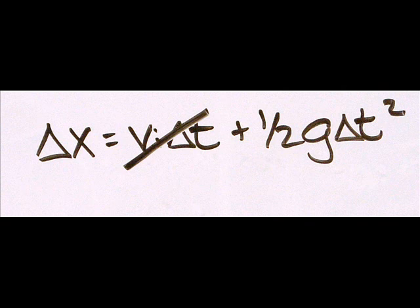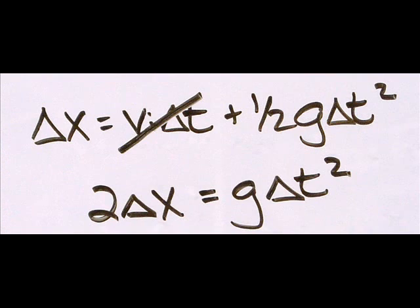Simplify the expression since vi equals zero. And, hey, look there, we've got x is equal to a constant, one-half g, times t squared, the exact expression that Galileo was working with.